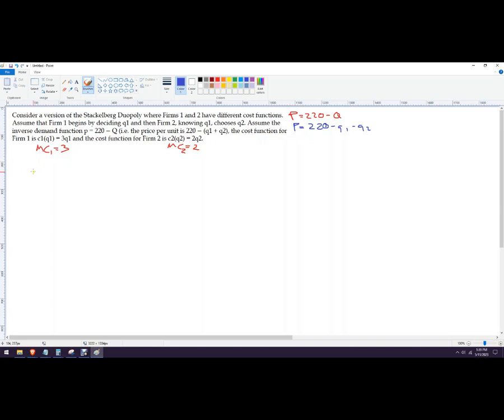So we need marginal revenue, which we get from total revenue. Total revenue for firm 1 is going to be price times quantity for quantity of firm 1. So total revenue for firm 1 is all of this. So it would be 220 minus Q1 minus Q2, so this whole thing times Q1. So total revenue, 220 Q1 minus Q1 squared minus Q2 Q1.